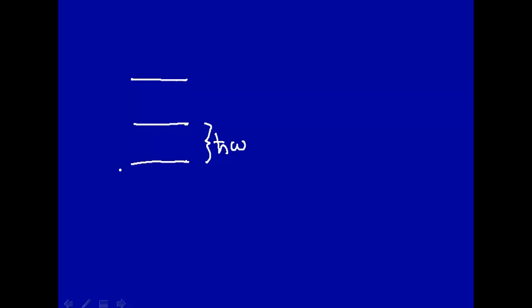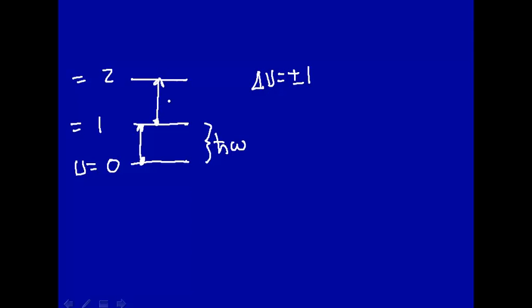In vibrational spectroscopy, you have a series of equally spaced energy levels with spacing ℏω. The ground state has vibrational quantum number ν = 0, then ν = 1, ν = 2, and so on. The selection rule is Δν = ±1, meaning you can go from ν = 0 to ν = 1, or ν = 1 to ν = 2, etc. However, because the actual system is not a perfect harmonic oscillator, you can have transitions like ν = 0 to ν = 2, where Δν = 2. This is called an overtone.